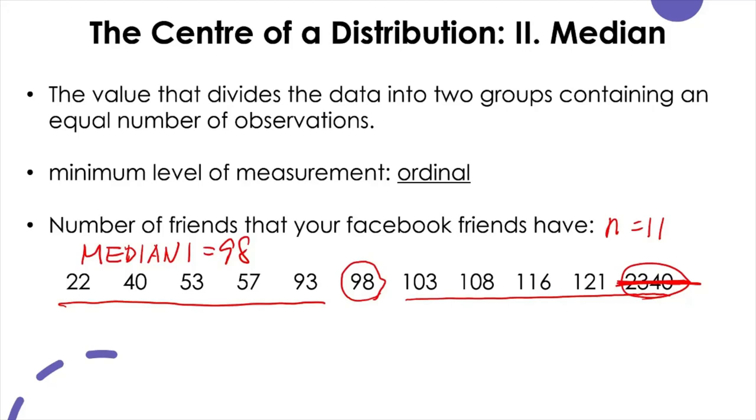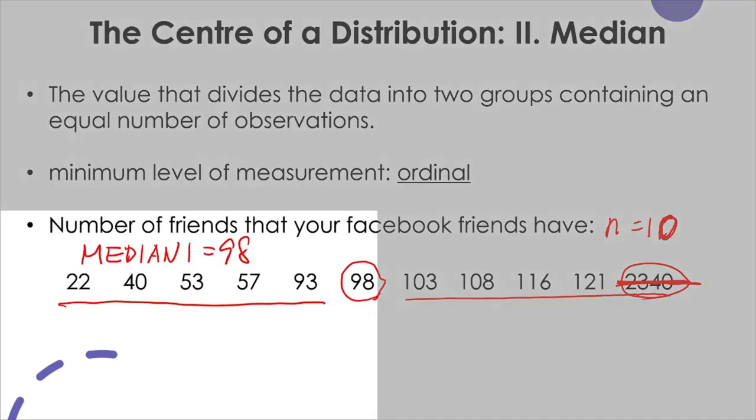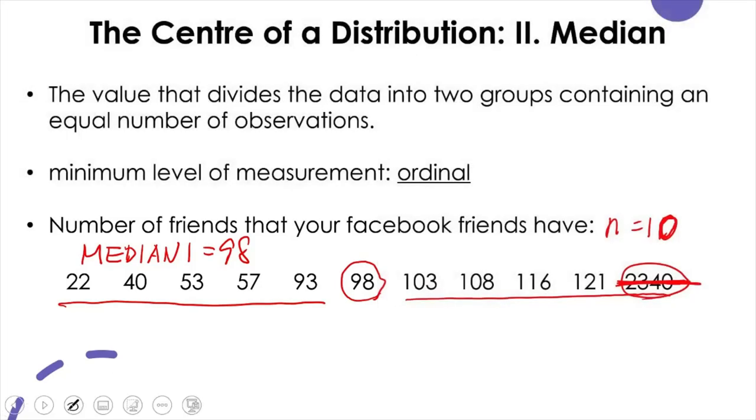You just remove this. Now, the number of Facebook friends, the size of the dataset, the number of samples in this dataset now becomes 10. Now we have an even number of data, and how do we calculate the median? In this case, you need to find out two middle scores splitting the number of data into the same lower and upper halves, and calculate the average of the two scores.